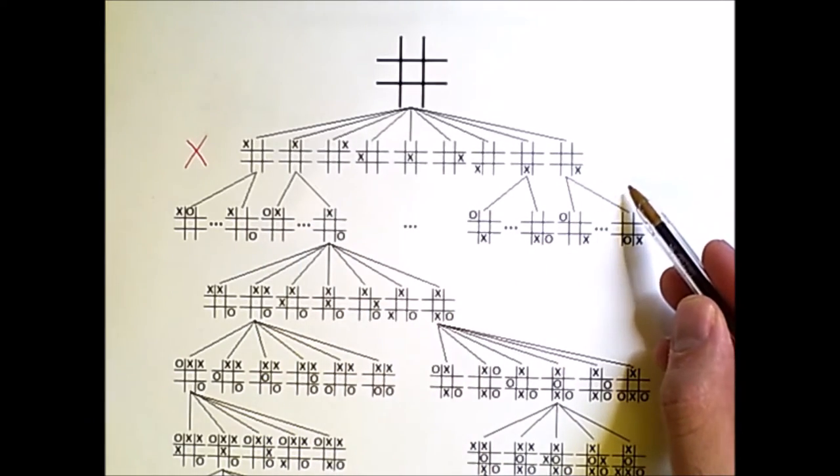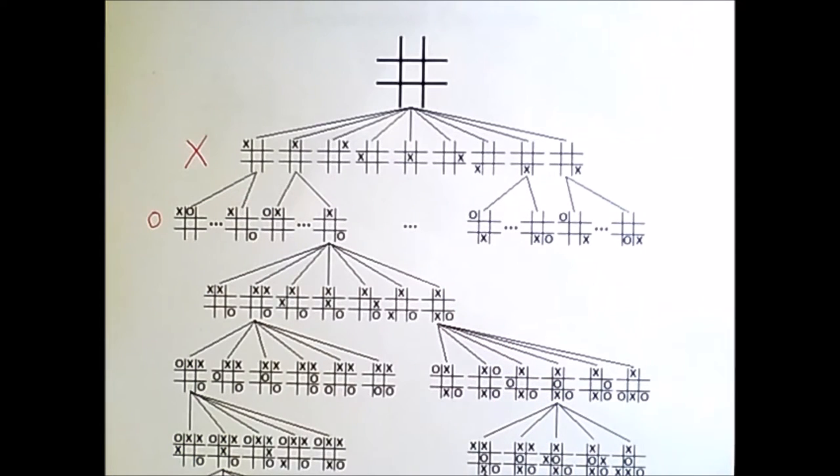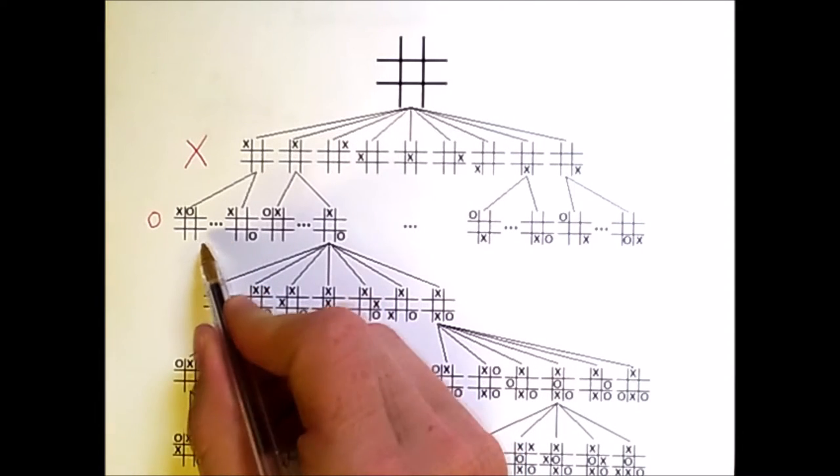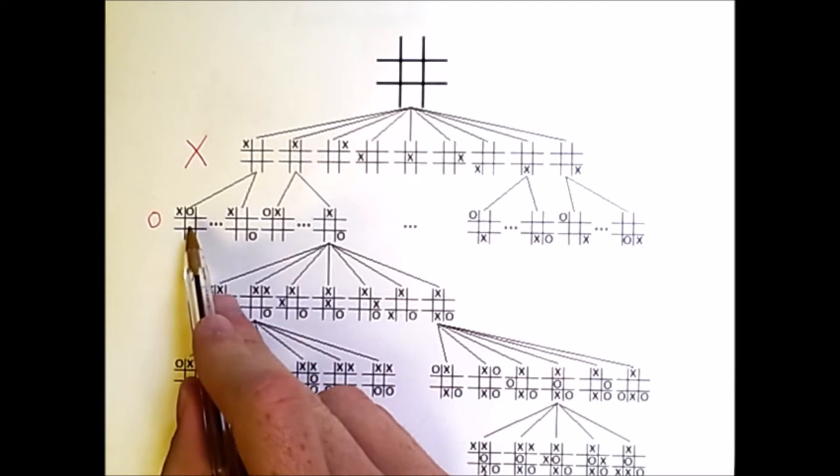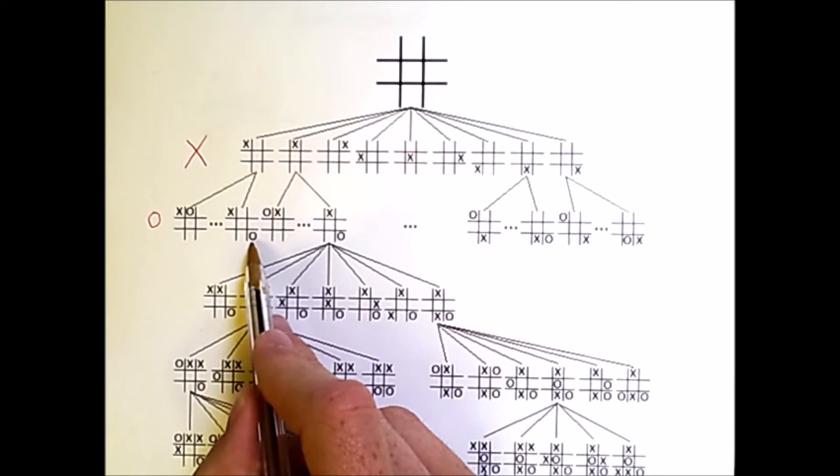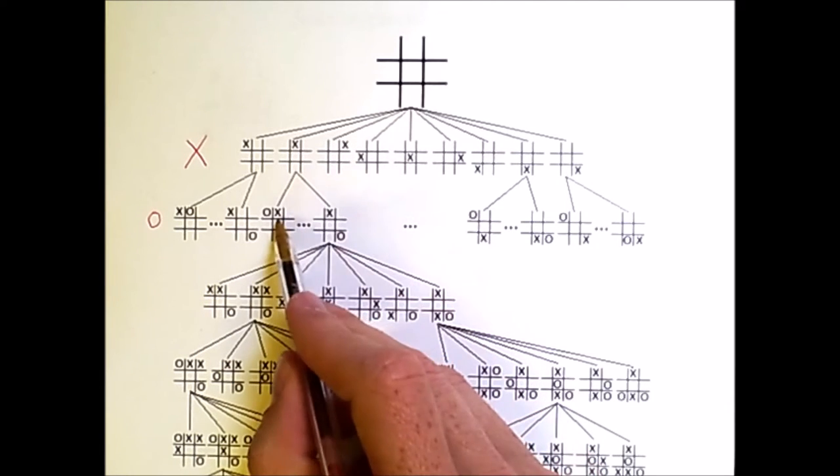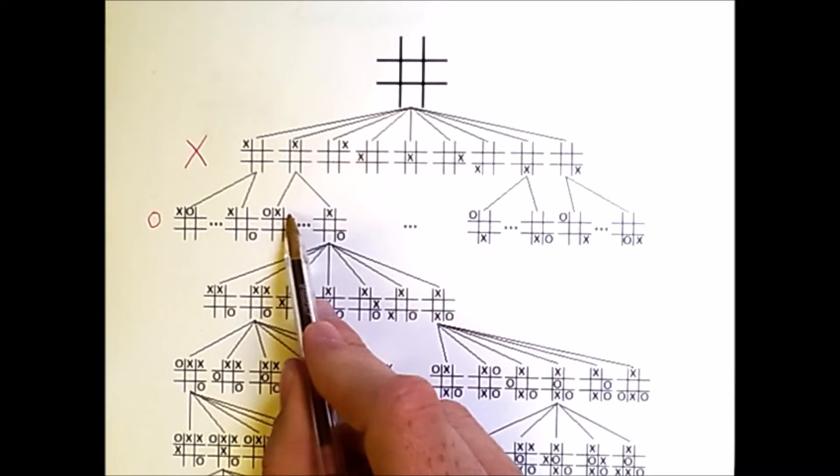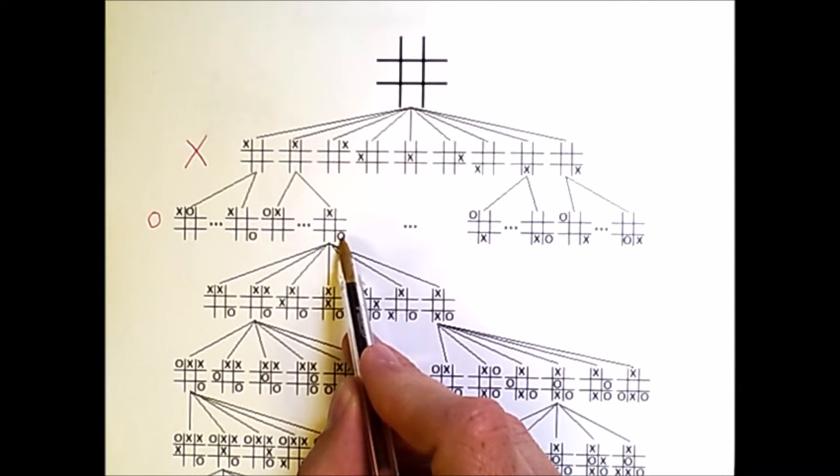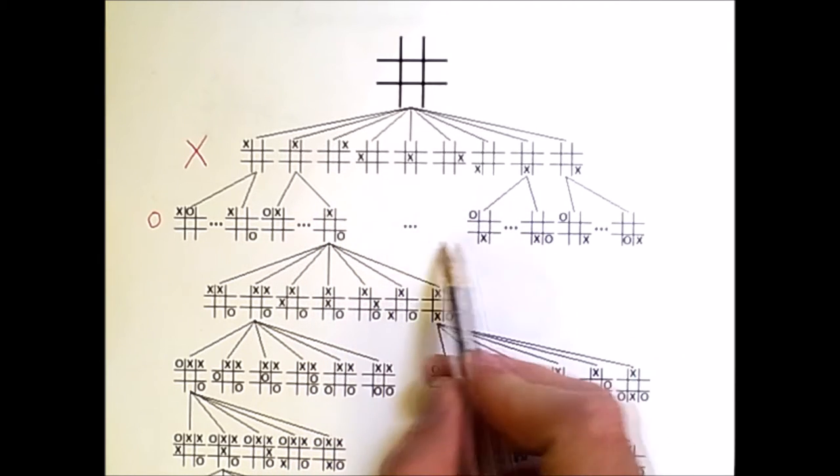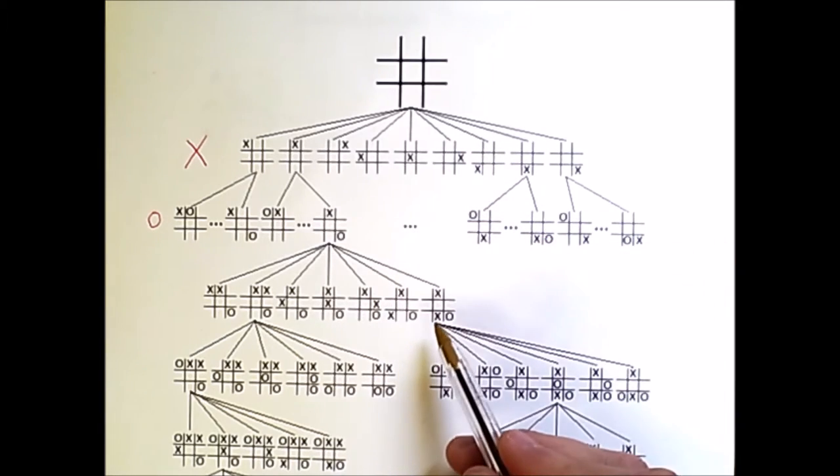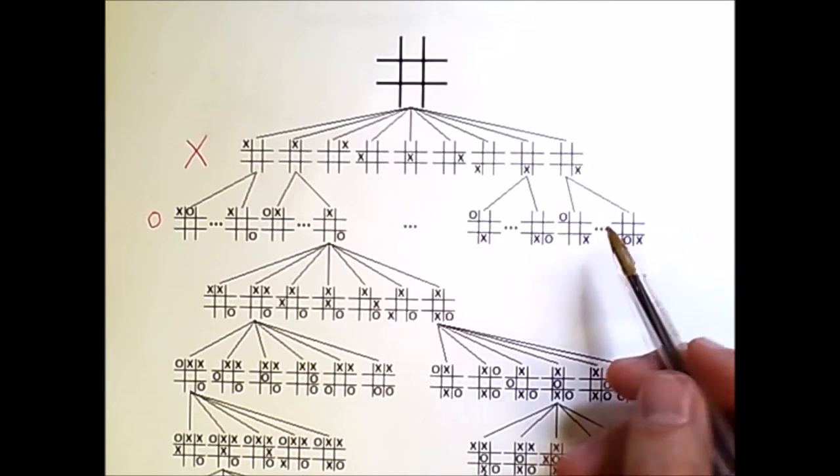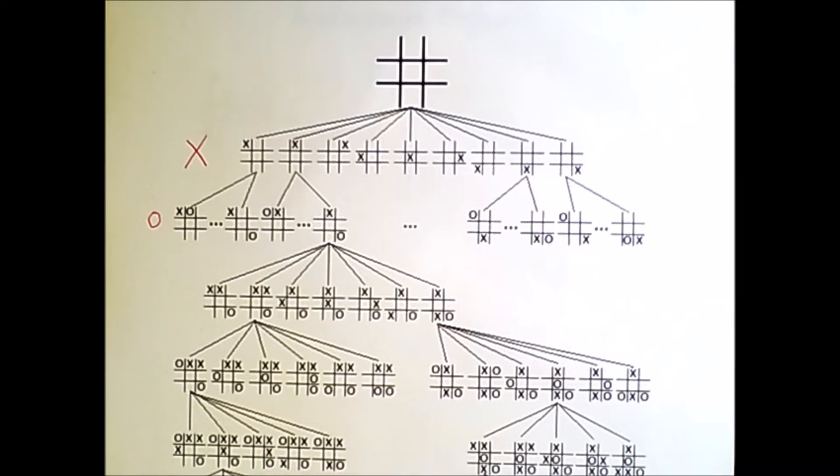From each of these nine states, O, or the circle, can make a follow-up move in eight more states. I've used ellipses to indicate that there are several missing states here, but you can see that there are many possibilities. I've expanded particular sections of this tree to make some interesting points and to show you how we can search this tree in order to make wise move choices.